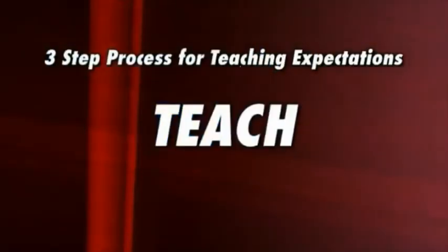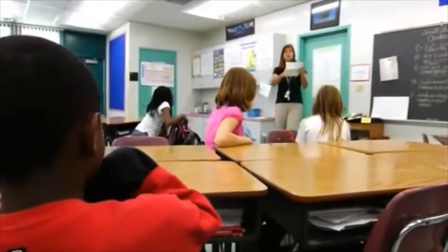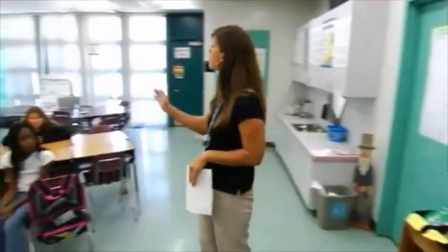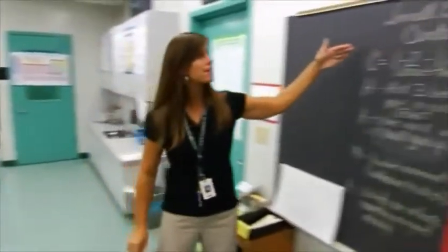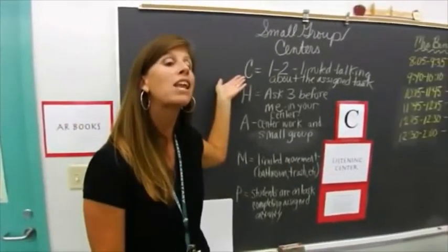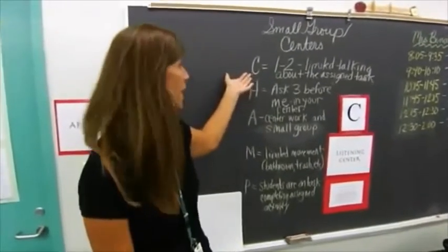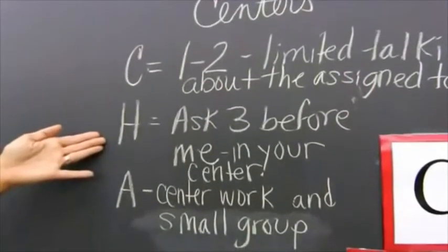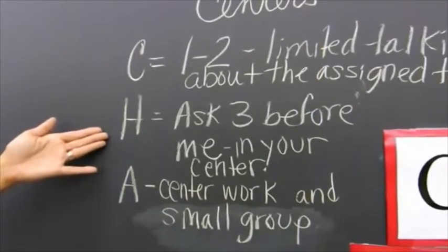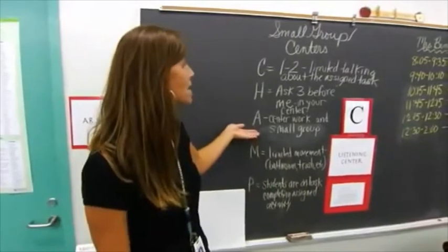Teach. Let's say you're about to have your class move to a small group center activity. Before beginning, let them know what your expectations are using CHAMPS. We are getting ready to go into our center activities, but before we do that, we need to have everybody's eyes up here so we can CHAMP out this activity. Our conversation is going to be a one to two — I need limited talking and you're only supposed to be talking with the people in your group. It has to be about the assigned activity. If you need help, I need you to ask three before me.